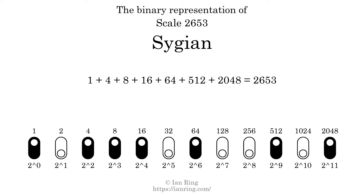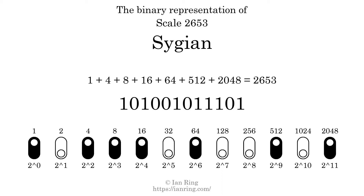The scale number not only enumerates the scale with a unique index, but it also literally describes the tonal content of the scale. The scale number in binary is 1, 0, 1, 0, 0, 0, 1, 0, 1, 1, 1, 0, 1. Here are the harmonic triads present in this scale.